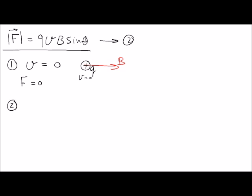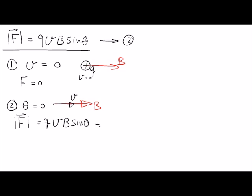Case two: what if the magnetic field is going one way and the velocity has the same direction as the magnetic field? The angle will be zero, so the force magnitude is QVB sin 0. Since sine zero is zero, we get a zero force. So if the charge is moving but moving parallel to the magnetic field, the force is still zero.